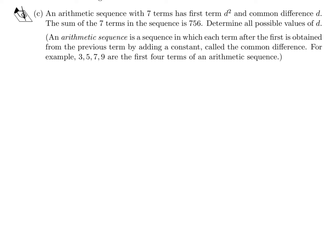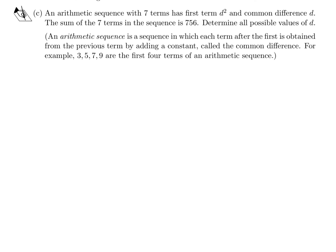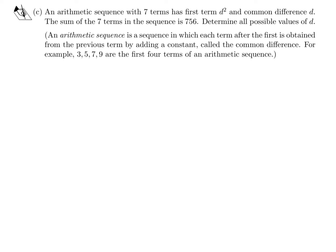An arithmetic sequence with seven terms has the first term d² and the common difference d. The sum of the seven terms in the sequence is 756. Determine all possible values of d. So the first term is d² and then the next term would be d² + d, then d² + 2d, d² + 3d, and so on. They want the sum of the seven terms. So 4d, d² + 5d, and the seventh term would be d² + 6d.